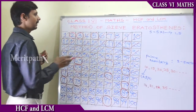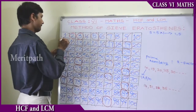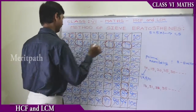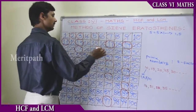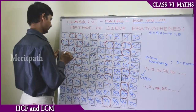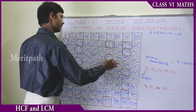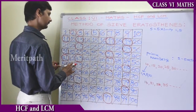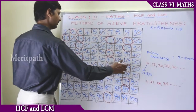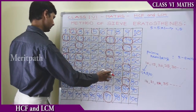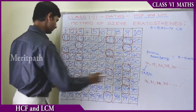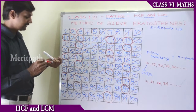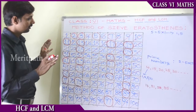Let's see each one here: 2, 3, 5, 7, 11, 13, 17, 19, 23, 29, 31, 37, 41, 43, 47, 53, and 59. 61, 67. 71, 73, 79, 83. 89, 97 are the prime numbers.